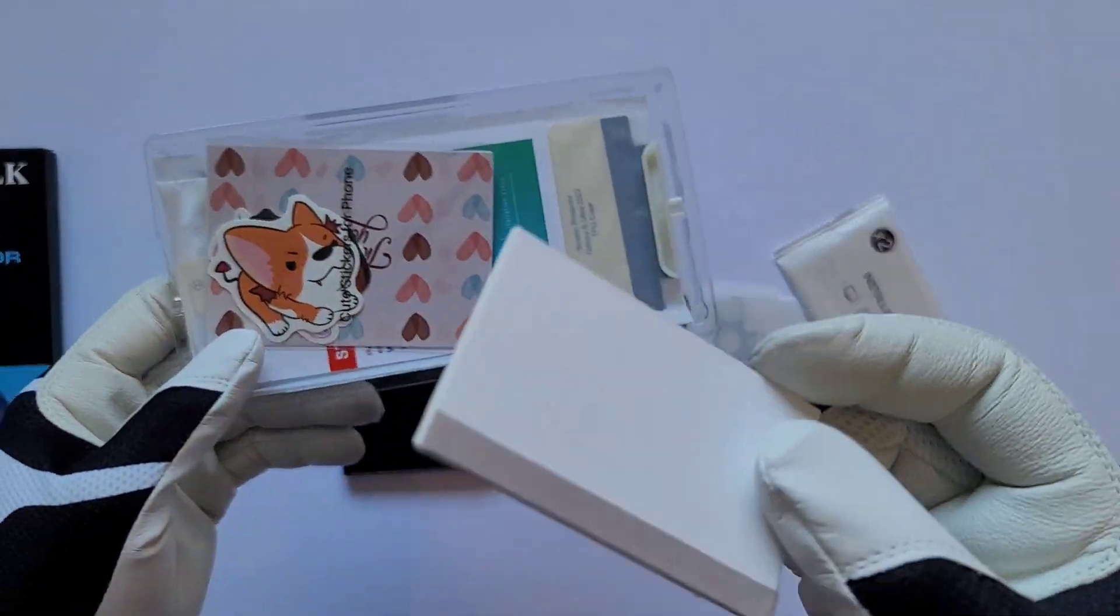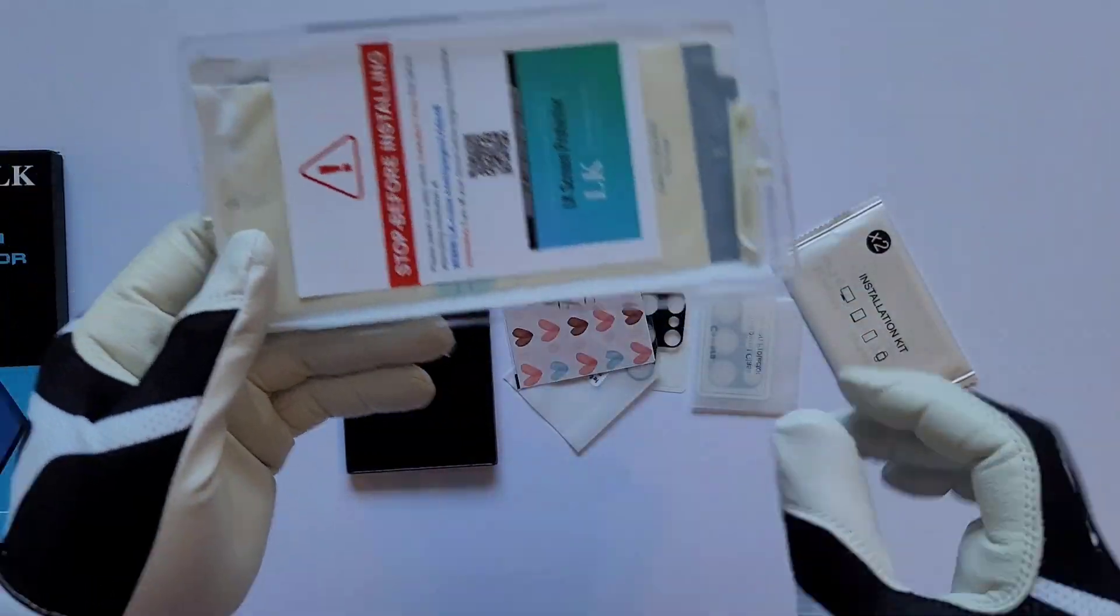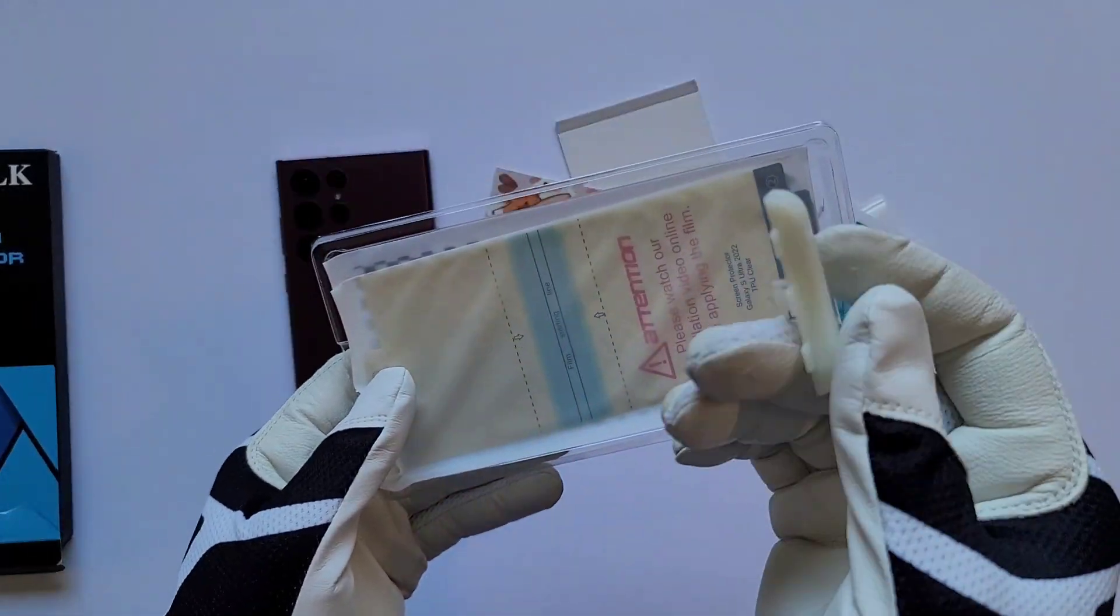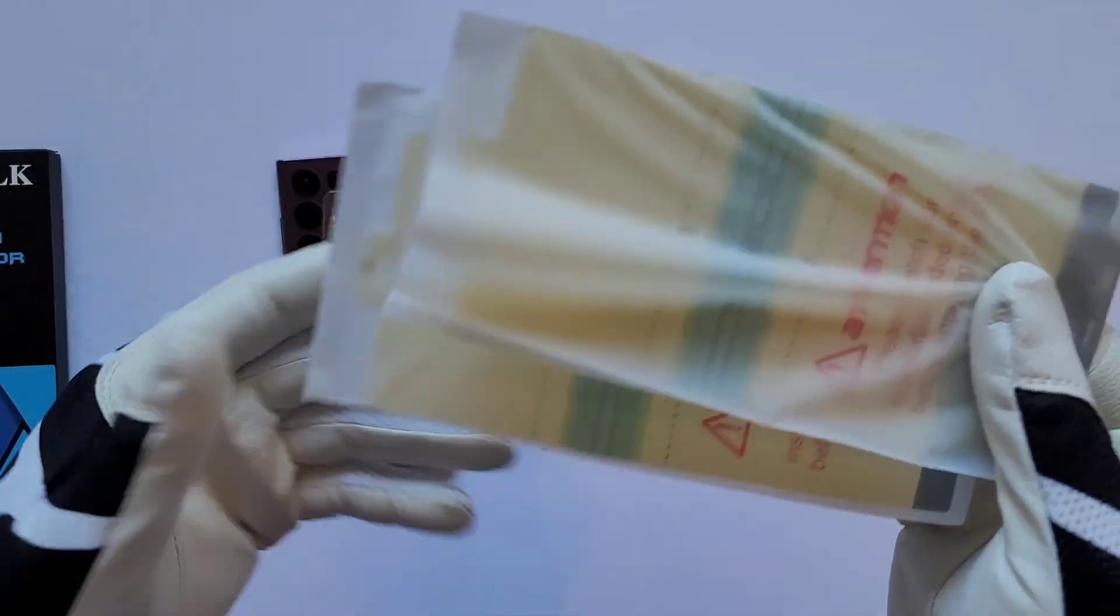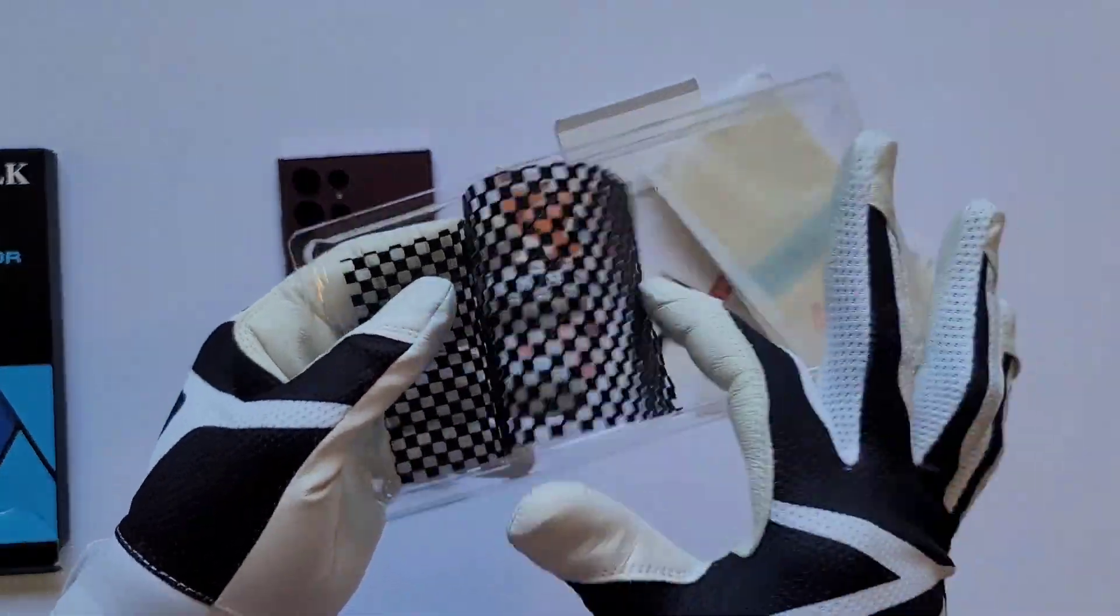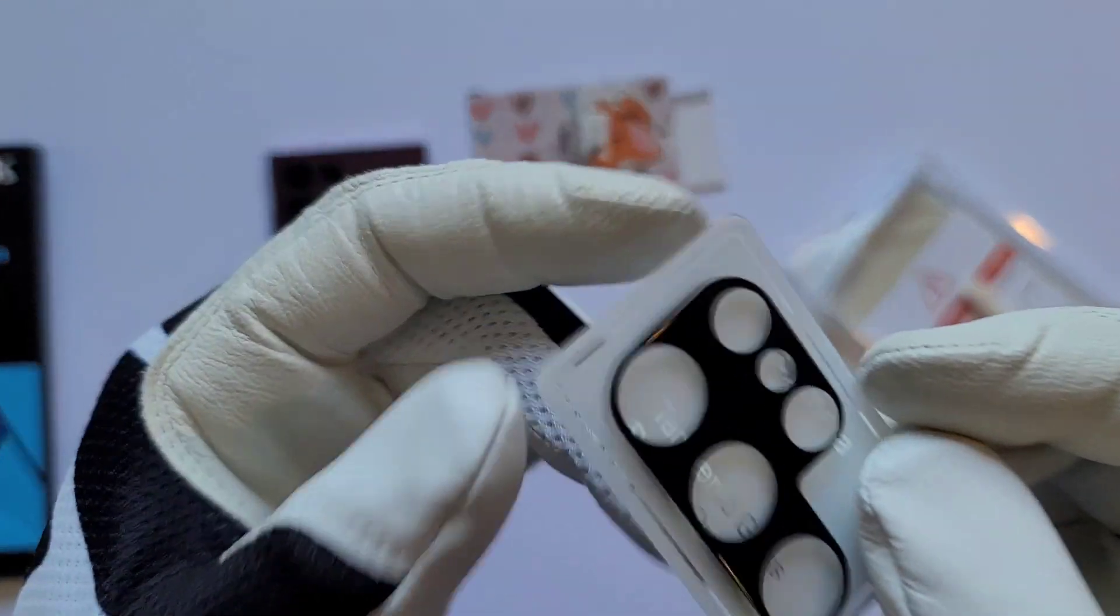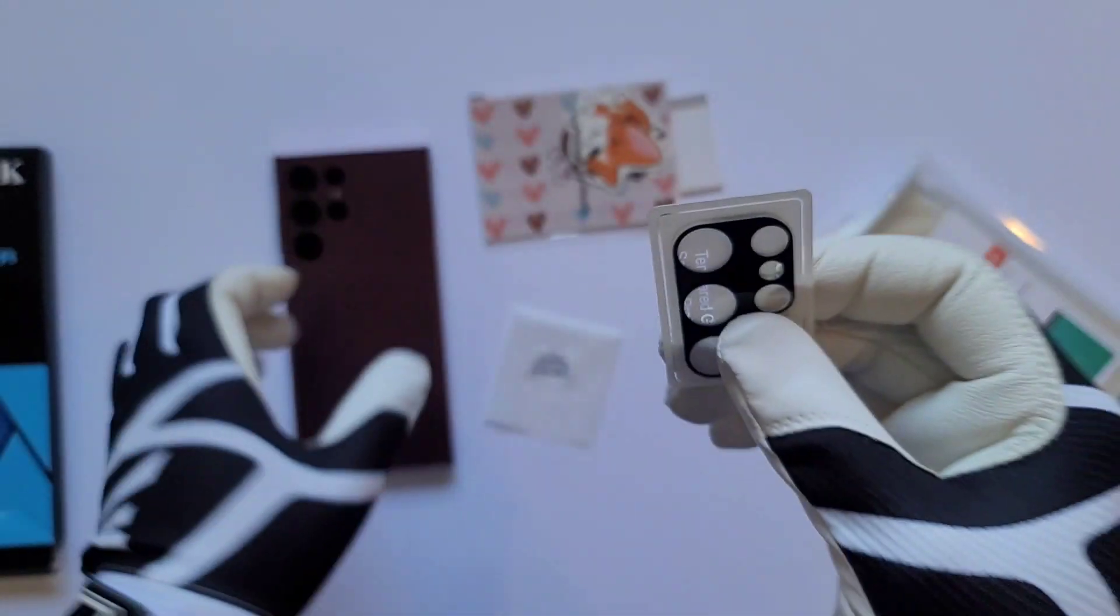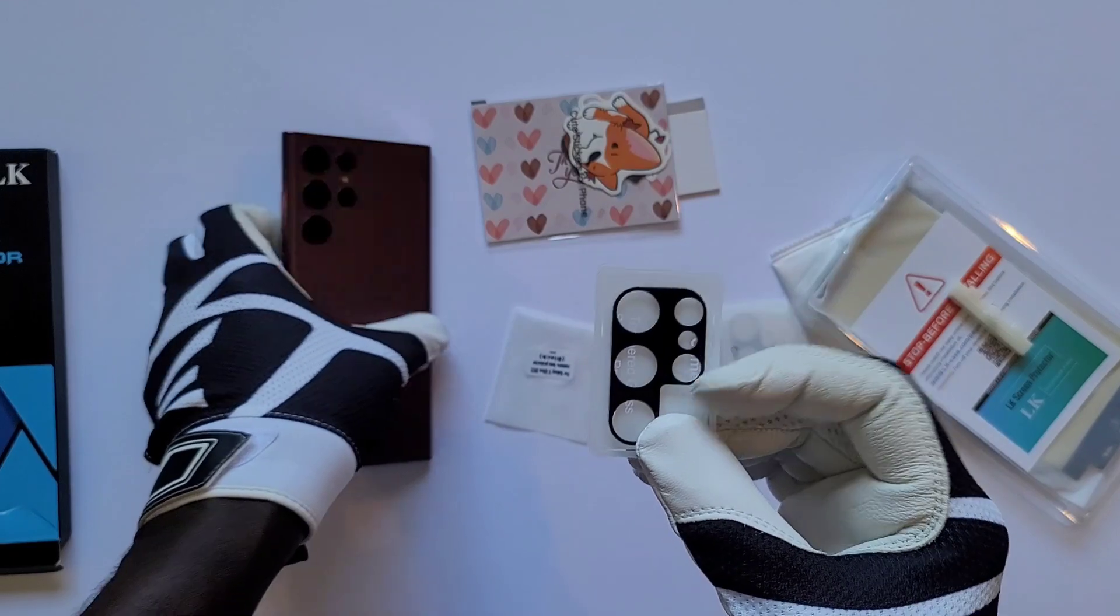The screen protector that I have right now is called the LK screen protector. It comes with four pieces: two screen protectors and two camera lens protectors. The camera lens protector is made of tempered glass. This plastic here is used to hold the phone when you put the screen protector on.